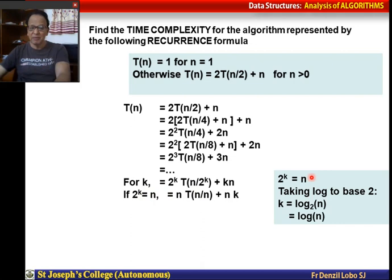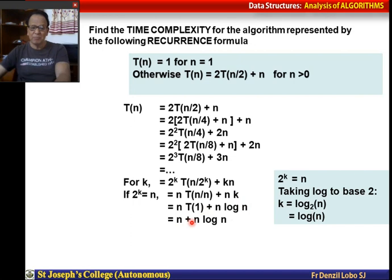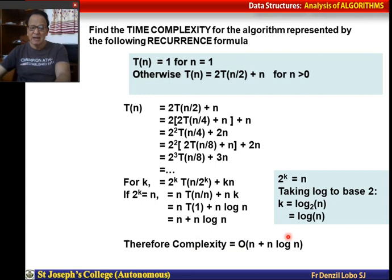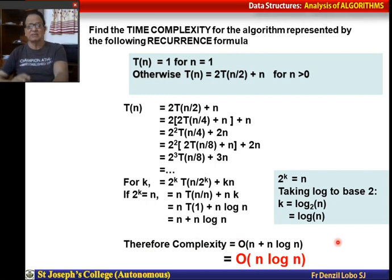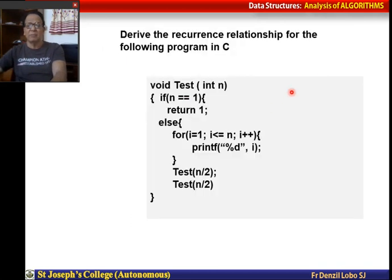If 2^k = n, then taking log base 2 gives k = log₂(n). Substituting: n · T(1) + n·log(n). Since T(1) = 1, this becomes n + n·log(n). Therefore the complexity of this recurrence formula is O(n + n log n), and since n log n > n, it simplifies to O(n log n).